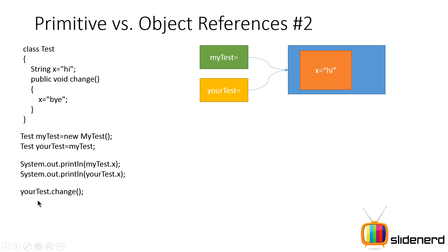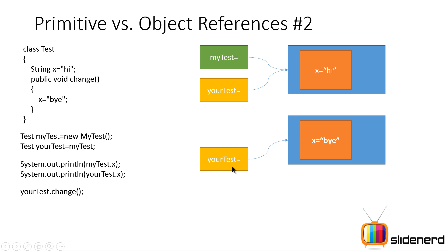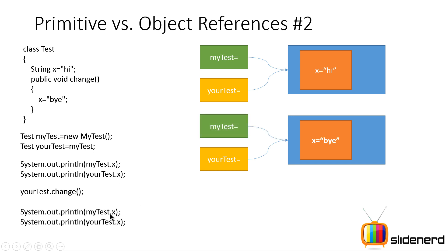Now notice carefully: I call yourTest.change(). yourTest contains the object, and I'm changing its value from 'hi' to 'bye'. But yourTest is pointing to the same address as myTest. So when you change the object at that address, you're also changing it for myTest. Hence, when you now print myTest.x and yourTest.x, since both point to the same place, both values become 'bye'. Object references share the same object when set equal.